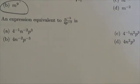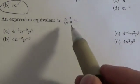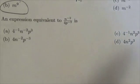Hi everybody, this is the Math 10C Exponents and Radicals review, and this is multiple choice question number eight. An expression equivalent to n to the negative two over 4p to the negative three is...